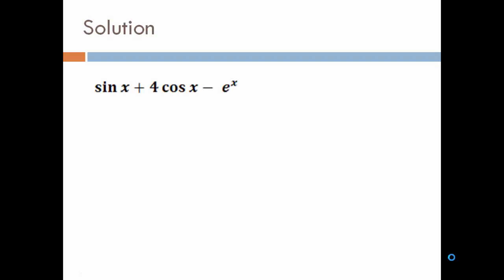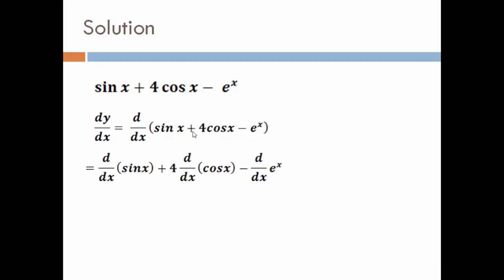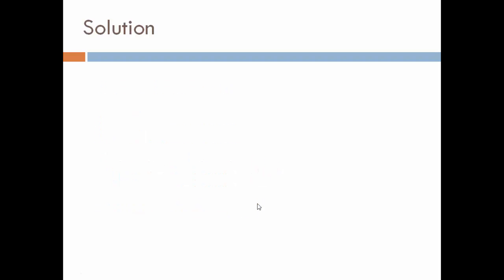Second example: sin x + 4cos x − e^x. dy/dx equals d/dx of the entire expression. The plus/minus sign does not affect differentiation, so: d/dx of sin x + 4·d/dx of cos x − d/dx of e^x. When a constant is in multiplication, differentiation does not affect it. d/dx of sin x is cos x; 4 stays as is and d/dx of cos x is −sin x; and d/dx of e^x is e^x. So the answer is cos x − 4sin x − e^x.